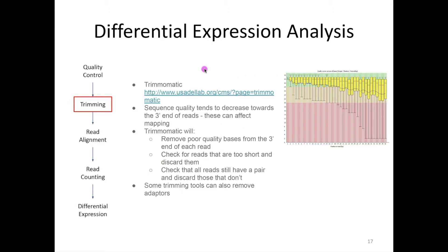This is a more typical quality plot. On the x-axis is the position in the read, from 5' end on the left to 3' end on the right. At each position, we're looking at the distribution of quality scores for all reads. As we go from left to right, the average quality decreases — that's typical of Illumina sequencing. But poor quality at the 3' end can make it difficult to map reads, so the first thing we normally do is run a trimming tool, which removes poor quality bases from the 3' end and discards reads that are too short to map after trimming.